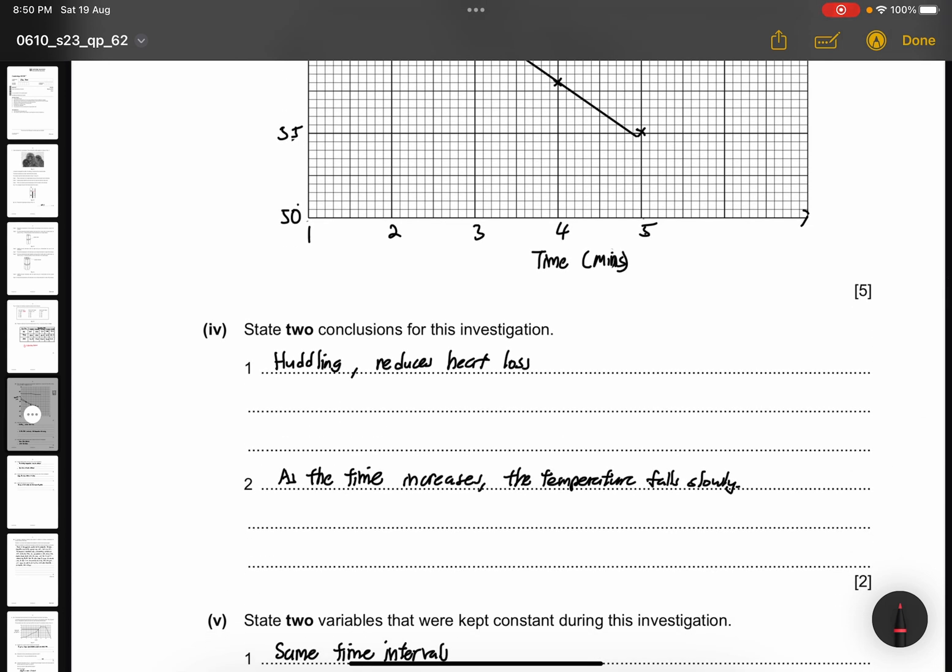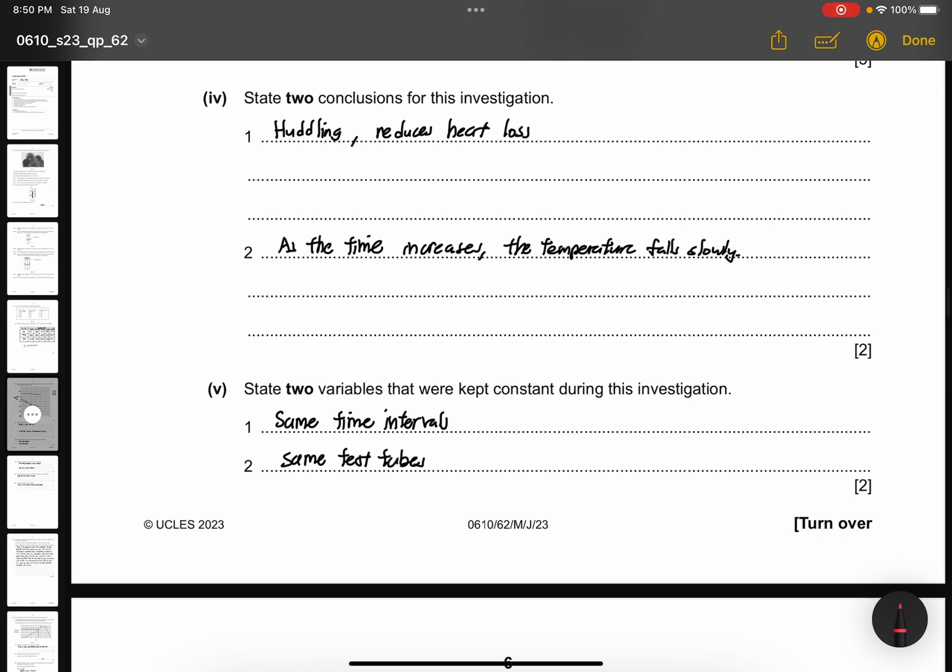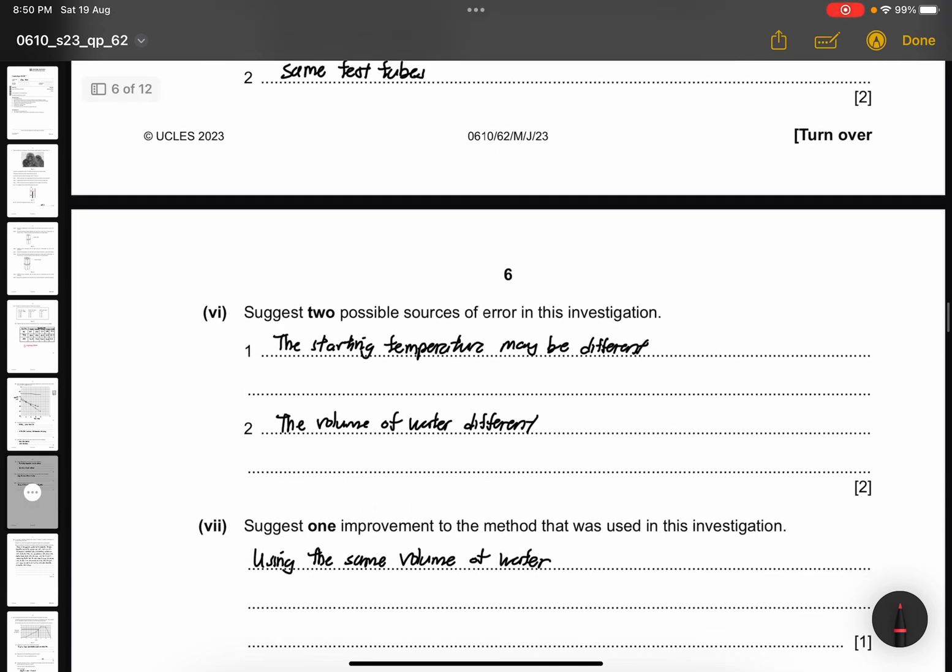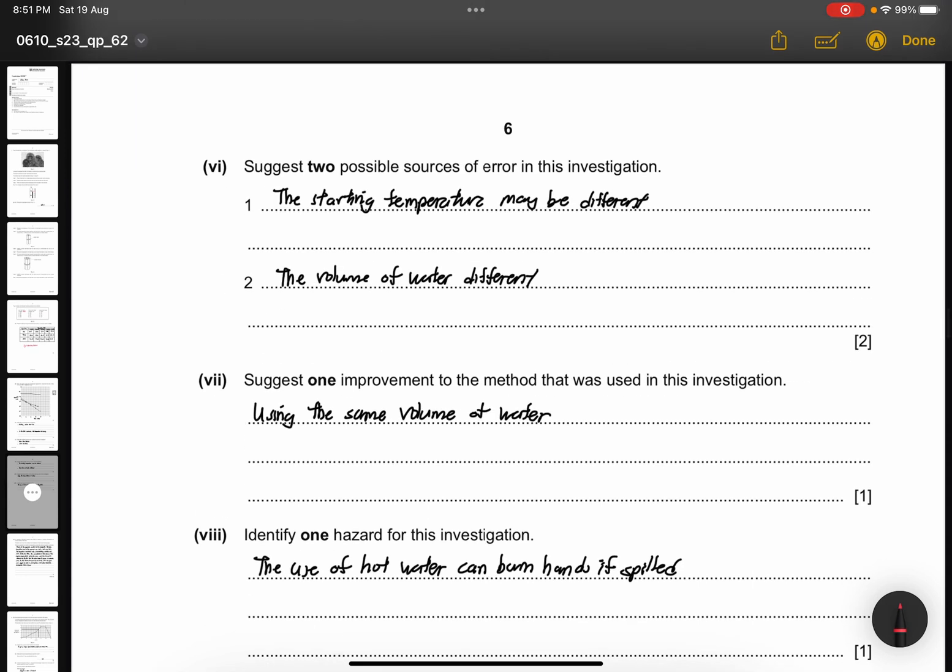Question part 4, state two conclusions for this investigation. Huddling can help to reduce heat loss or conserve more heat, or as the time increases the temperature falls slowly. The more test tubes, the slower the temperature drops or heat loss is lesser. Part 5, state two variables that were kept constant during this investigation. I have written same time intervals and same test tubes. Part 6, suggest two possible sources of error in this investigation. The source of error I found is that the starting temperature can be different, or the volume of the water can be different, or no band around one test tube - bands only on three and seven test tubes and there would be no insulating effect. The band tightness is not the same and it could vary and there could be a change in environmental conditions.